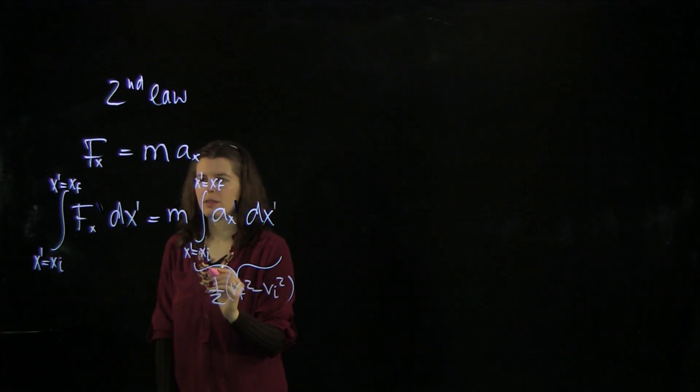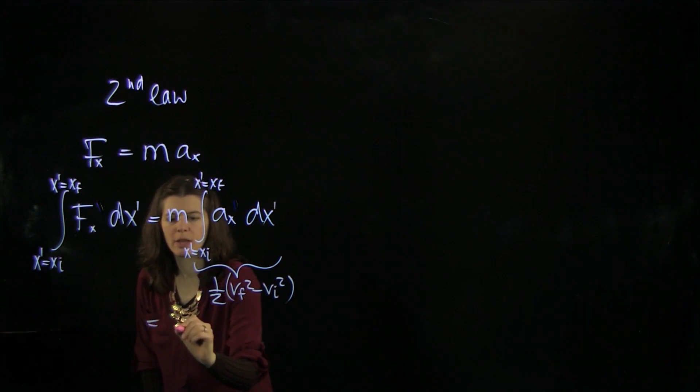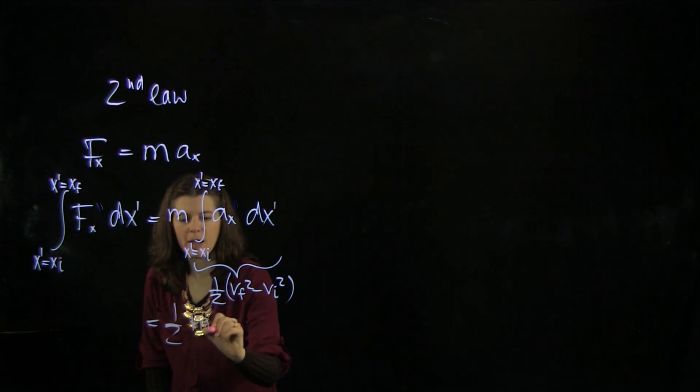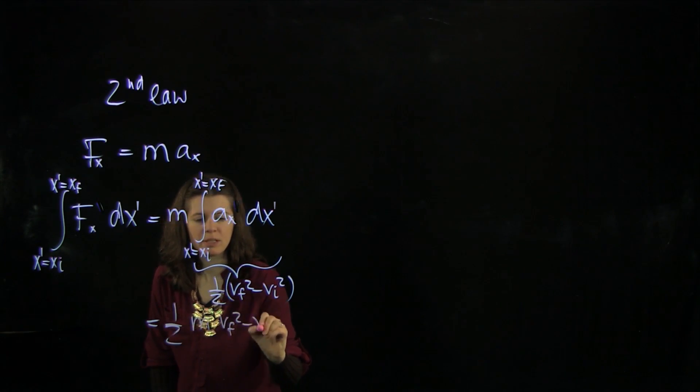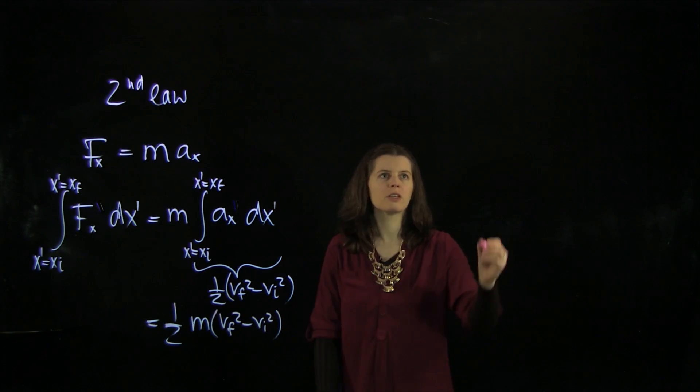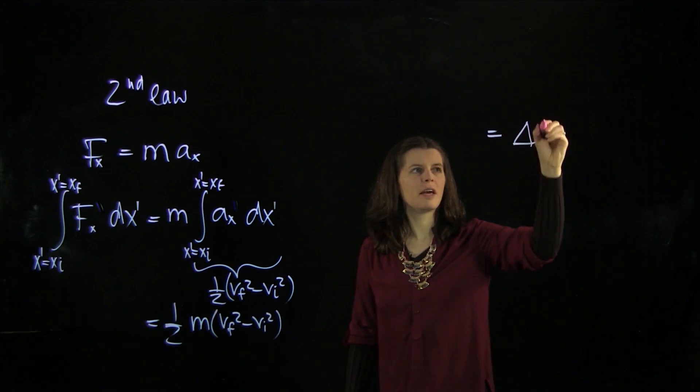And if we're going to plug this in here, we're going to get that this expression is 1/2 m v final squared minus v initial squared. And you should recognize this term. This is the change in kinetic energy.